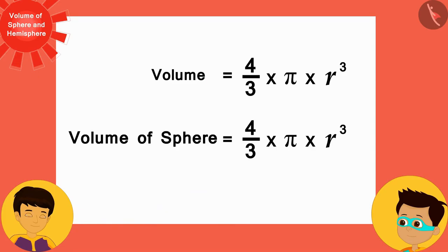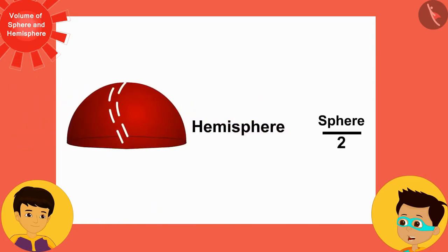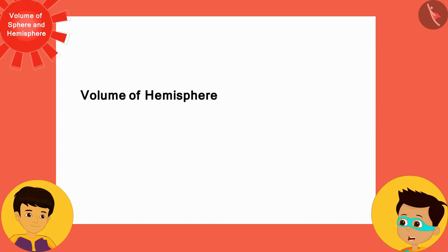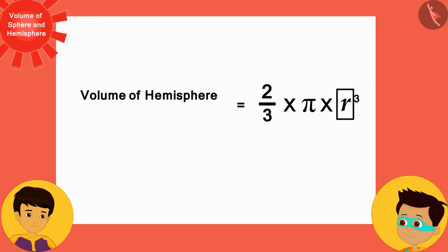Hey, wow, Manas! The hemisphere is half of sphere, is it not? This means that we can write the formula of volume of hemisphere in this way by dividing the volume of the sphere by 2, where R is the radius of the hemisphere.